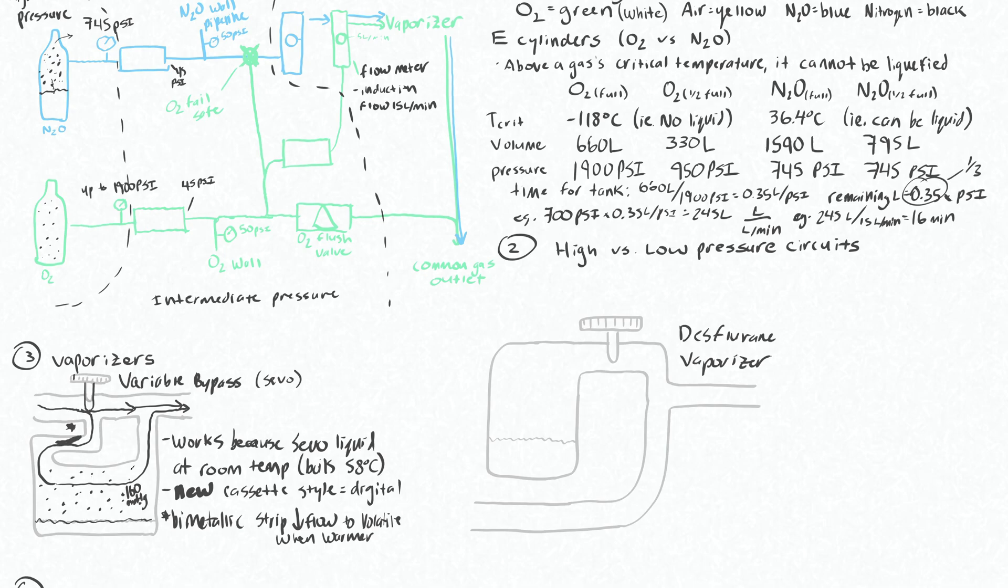The des vaporizer is different because des is troubling in that its boiling point is very close to room temperature: 23.5 degrees Celsius. So if you put des in here it'll all boil out essentially and you'll have no liquid phase here. Instead for des we heat it to 39 degrees Celsius and we pressurize this container so there's a liquid phase still.